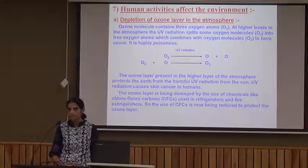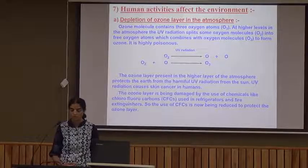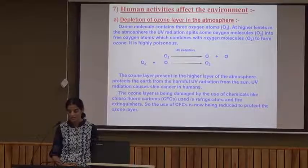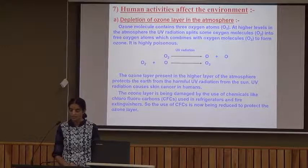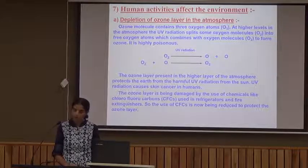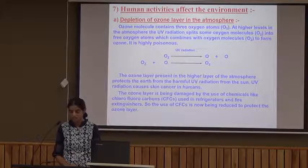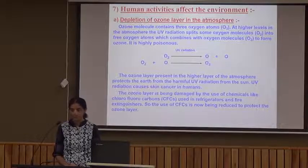An ozone molecule contains three oxygen atoms. At higher levels in the atmosphere, UV radiation splits oxygen molecules into free oxygen atoms, which then combine with oxygen molecules to form ozone. Ozone depletion is harmful because UV radiations reaching Earth result in skin cancer in humans. The ozone layer is also damaged by chemicals like chlorofluorocarbons (CFCs), which are used in refrigerators and ACs. The use of CFCs is now being reduced to protect the ozone layer, which acts as a protective umbrella for us.